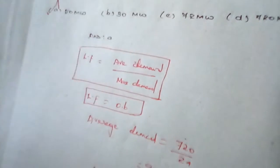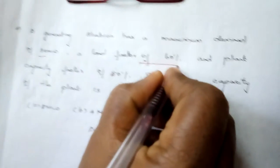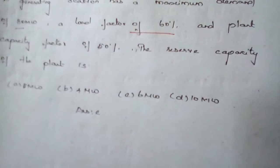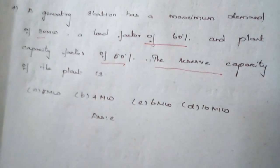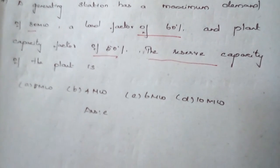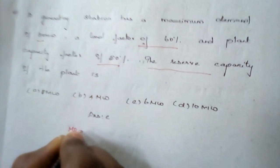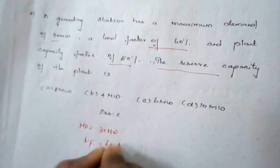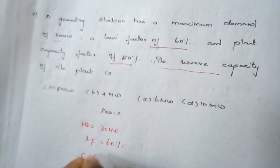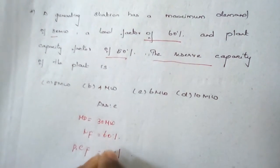Question number four: a generating station has a maximum demand of 30 megawatt and a load factor of 60 percent. The plant capacity factor is 50 percent. We are supposed to find the reserve capacity. The maximum demand is 30 megawatt, load factor is 60 percent, and plant capacity factor is 50 percent.